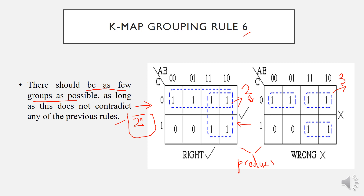That covers all the rules for grouping cells in a K-map. In the next part, I will give an example of how to write a Boolean expression based on the groupings we have done in the K-map. Thank you.